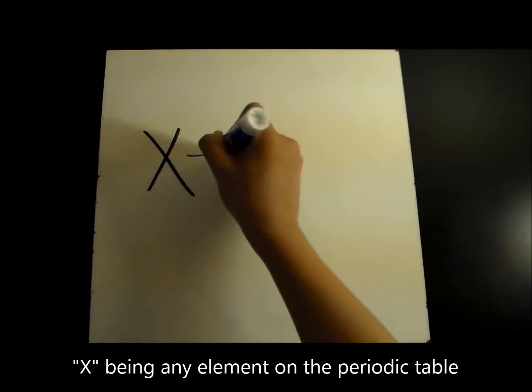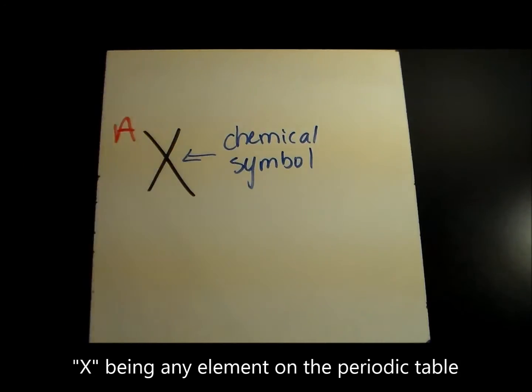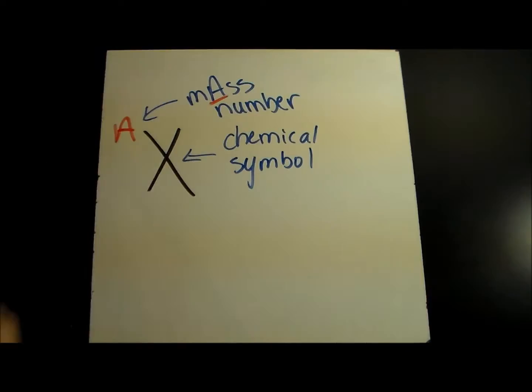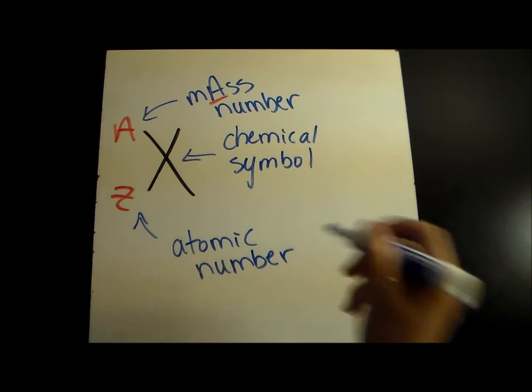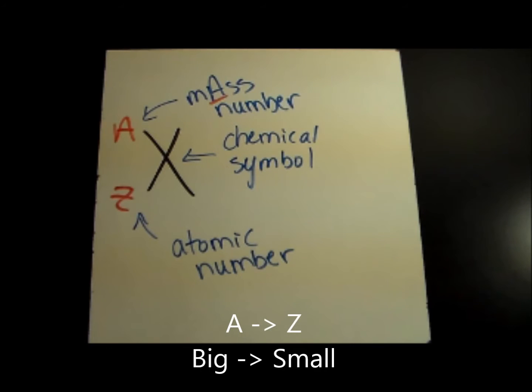Elements are represented by their chemical symbol, say X, with the mass and atomic numbers written to its left. The mass number A is written at the top left, and the atomic number Z is written at the bottom left. The easiest way to remember this is that they are always written from A to Z, big to smaller number.